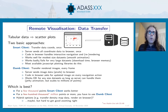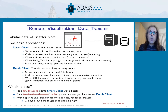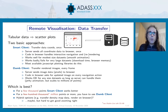What I'm talking about with browser visualization here is visualization of tabular data — effectively things like scatter plots, histograms, and 3D scatter plots. I'm not talking about all-sky visualization or visualization of gridded data. The key scenario is: you've got a browser and you want to display a plot, but your data is not local to that machine — it's on some server somewhere remote from where the browser is. There are essentially two approaches you can apply to that.